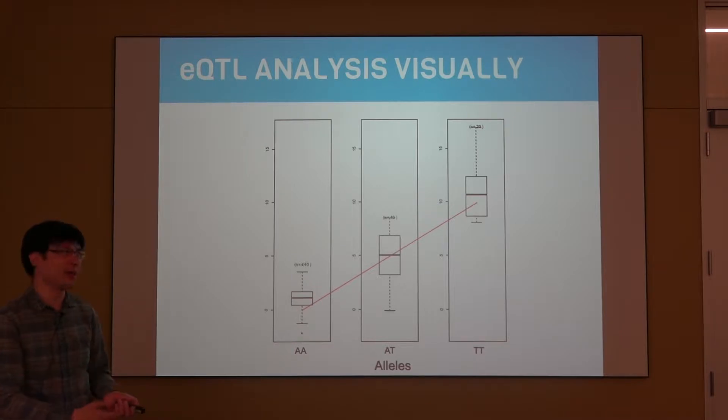This is a toy example and this is a very ideal case. As you can see in each of these bar plots, different individuals have different copies of the allele, so we start with AA and then AT and then TT. Since T is the minor allele and A, we have 140 individuals here that have the AA genotype and their expression is relatively low for this gene.